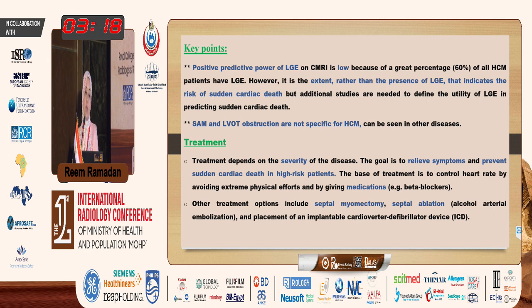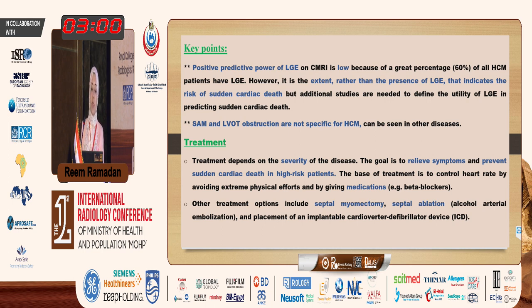As for the treatment of HCM, it depends on the severity of the disease. The main aim is to relieve symptoms and prevent sudden cardiac death in high-risk patients. The basis of treatment is to control heart rate, avoid extreme physical exercise, and give medications like beta blockers. Other treatment options include septal myomectomy, septal ablation, or implantation of an ICD.